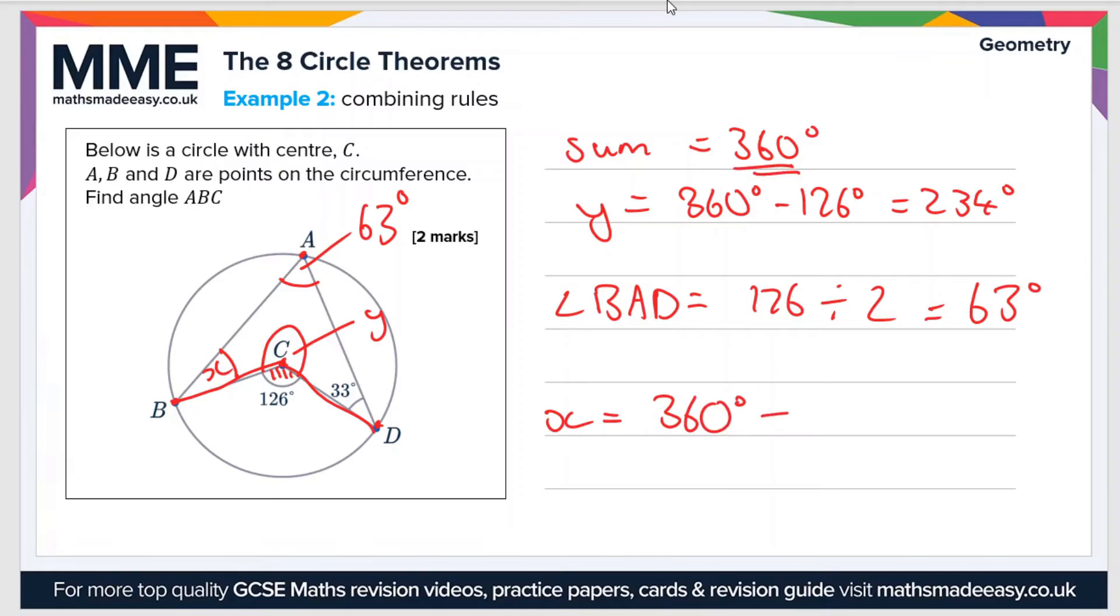So x equals 360 degrees, the sum of the internal angles of the quadrilateral, minus 234, that's this value here y, minus 63, which is this one here on the edge, and minus 33. And that gives us a value of 30 degrees. So angle ABC equals 30 degrees.